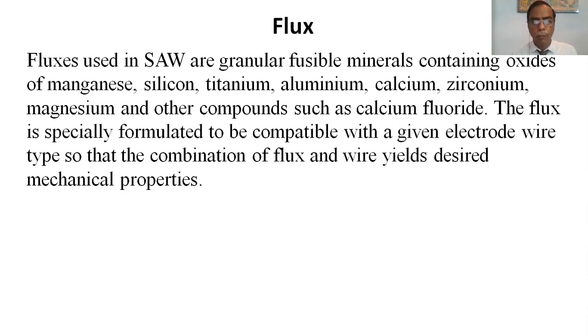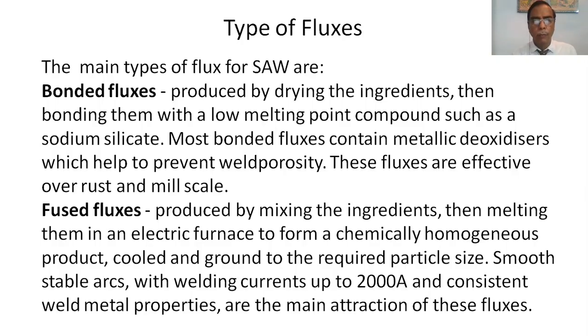Types of fluxes. The main types of fluxes for SAW are bonded fluxes produced by drying the ingredients then bonding them with a low melting point compound such as sodium silicate. Most bonded fluxes contain metallic deoxidizers which help to prevent weld porosity. These fluxes are effective over rust and mill scale.